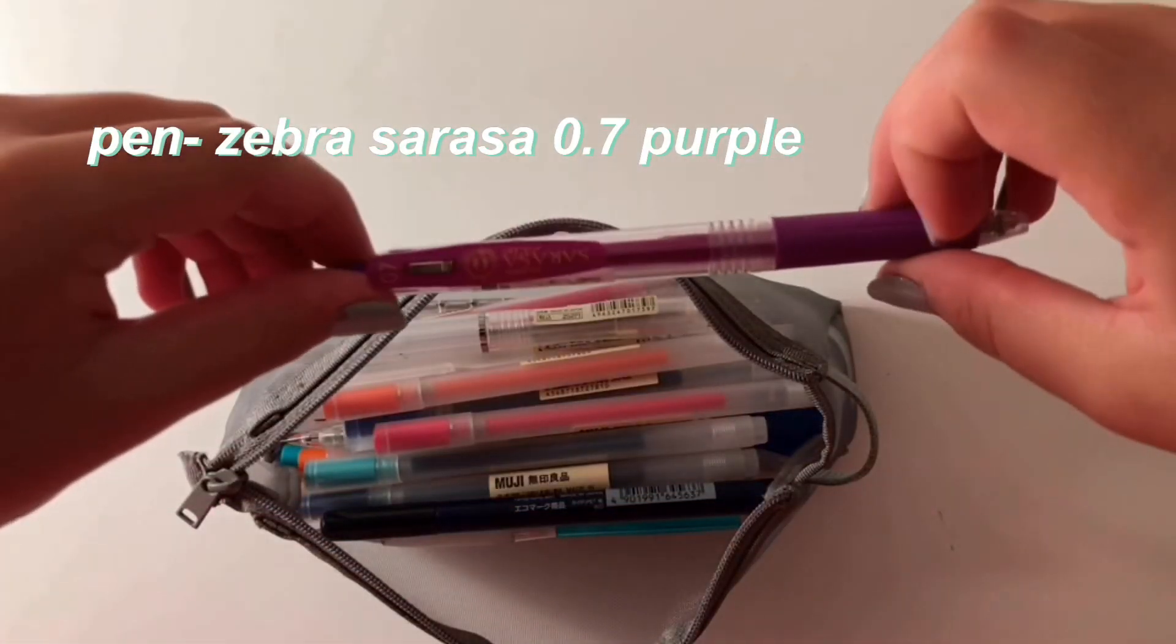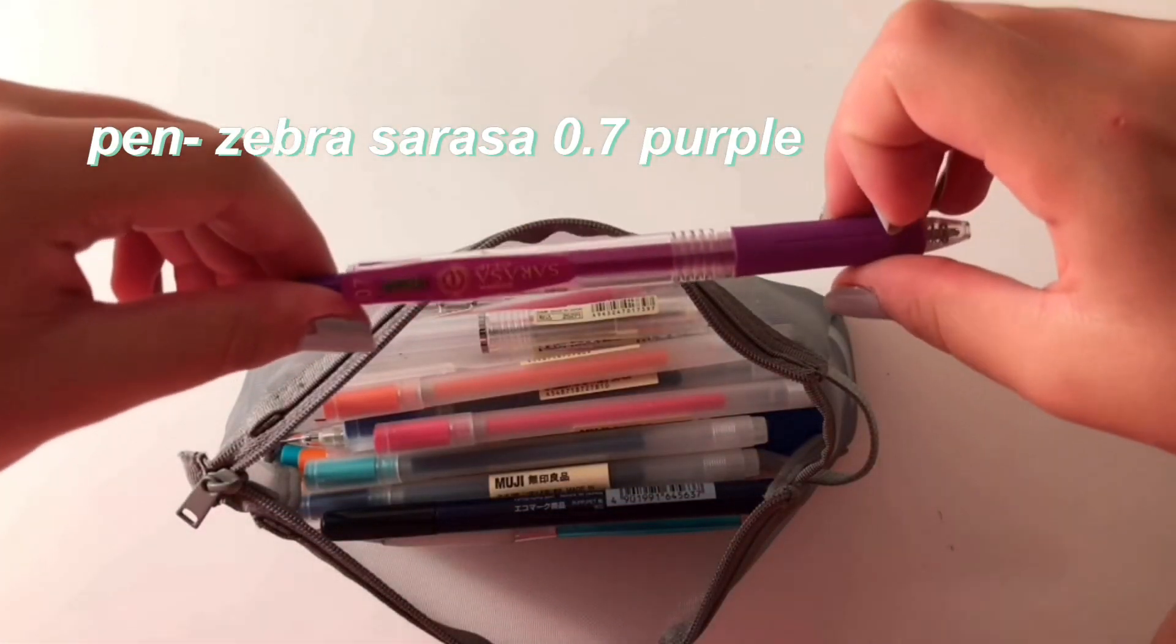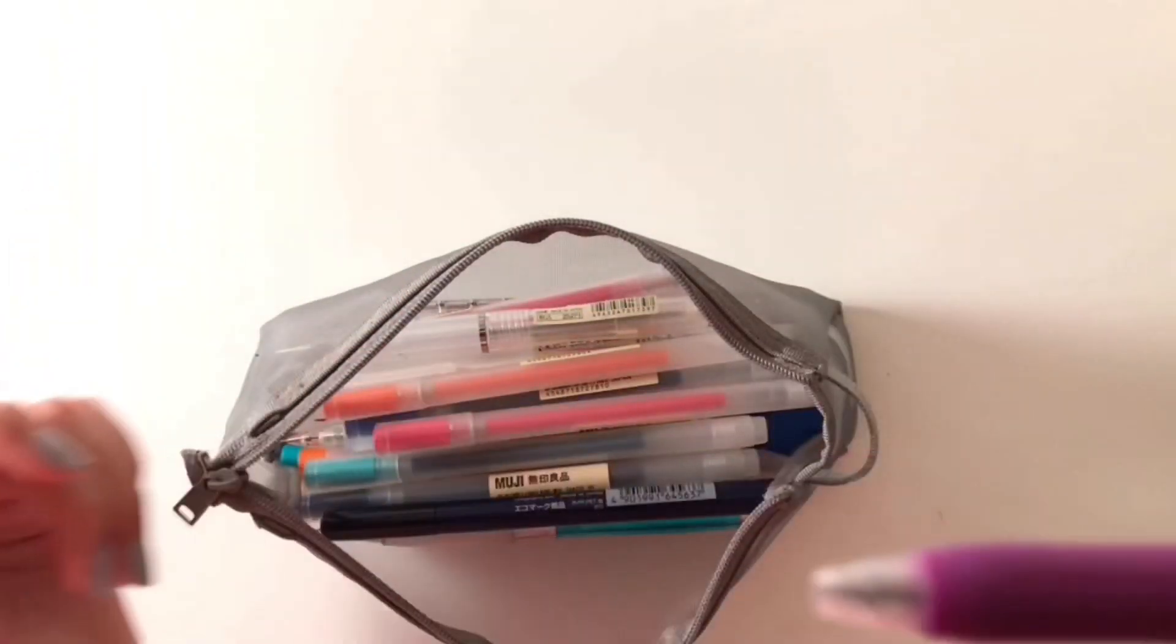Next this is just a miscellaneous pen. This is a 0.7 Zebra Sarasa for taking notes. It's really smooth and consistent and I really like this pen.